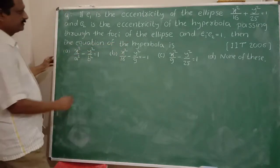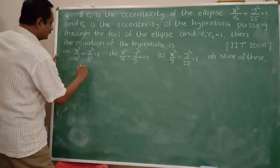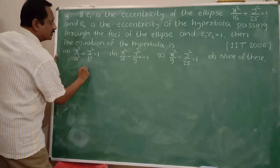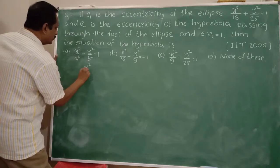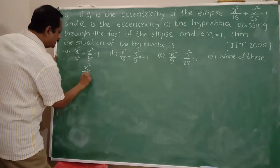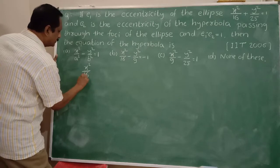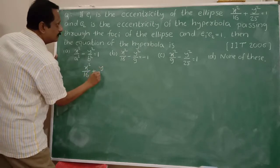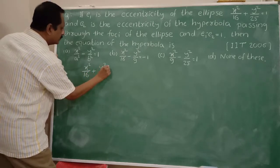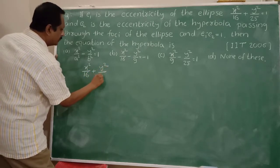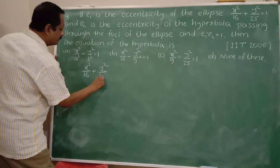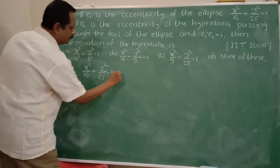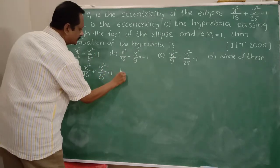So here, the equation of the ellipse is x² / 16 + y² / 25 = 1. Let this be the ellipse.